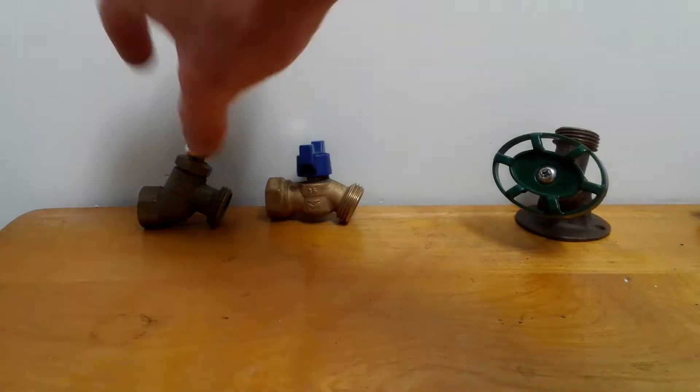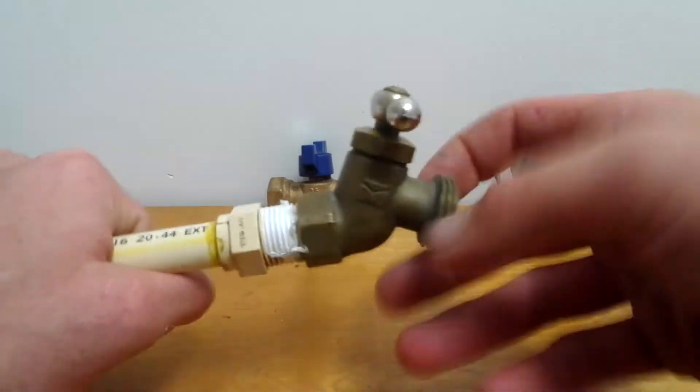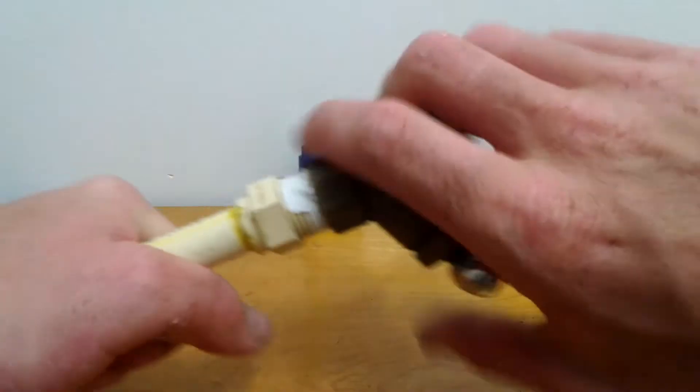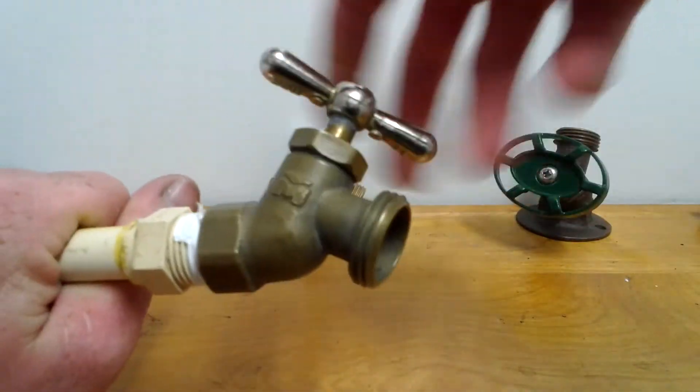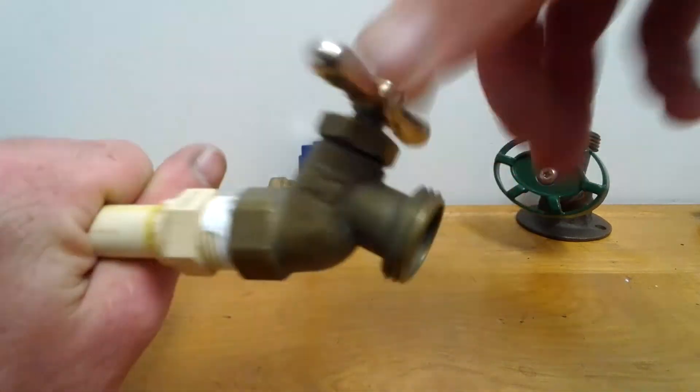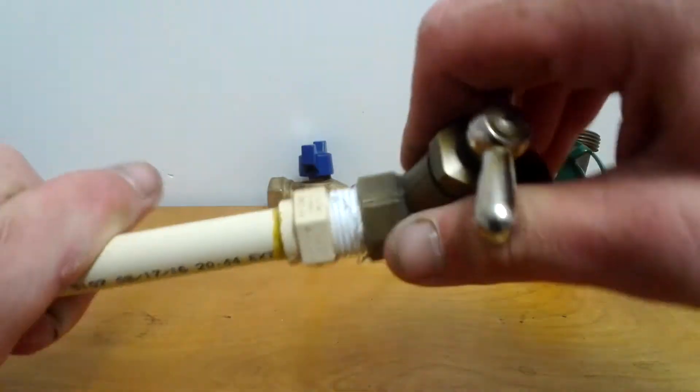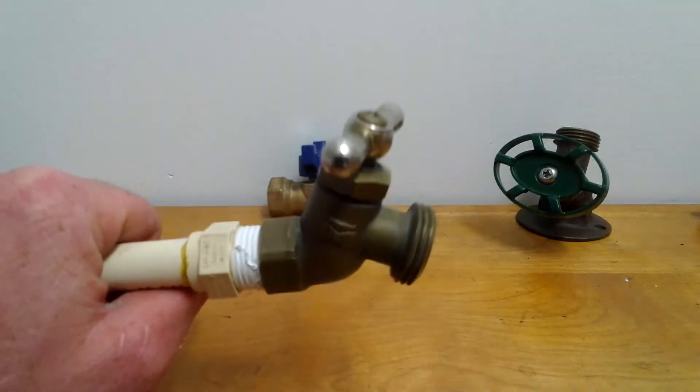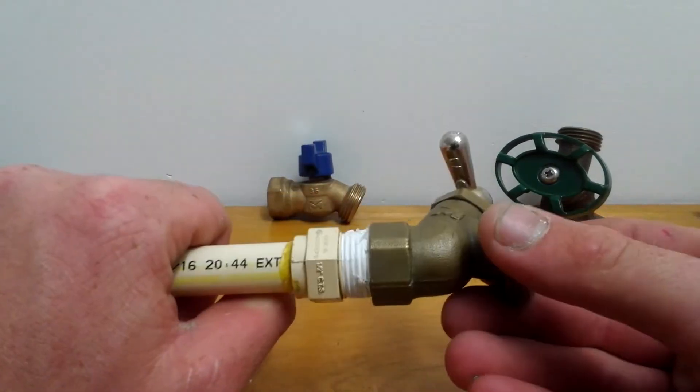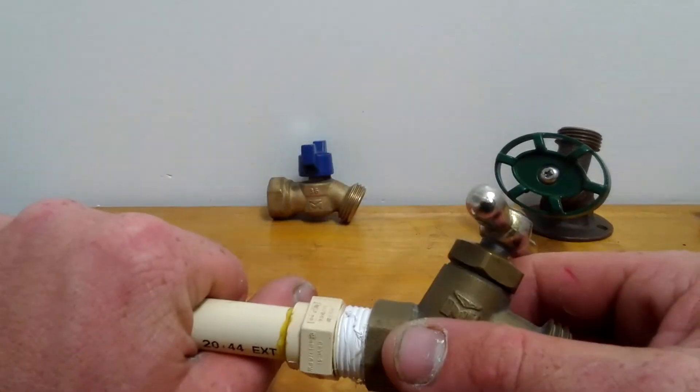So what this here is, this is an outdoor faucet hose bib, a no kink. I prefer this kind. It threads onto here, you put Teflon tape, you hand tighten it on there and it's good. All you need is hand tight. This is just a multi-turn no kink female thread hose bib.